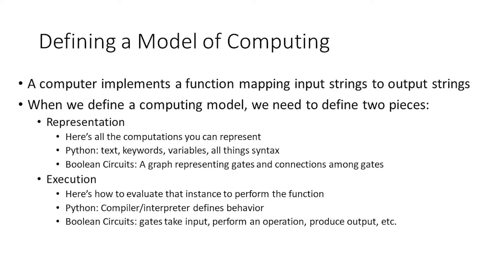As we go about defining a model of computation, we're actually going to need to provide two different components to formally describe what's going on. Those two things are going to be the representation of that model of computing and then the execution of that model. The representation is basically how you actually write down an instance of that model of computation, and the execution is how you process that description in order to actually perform some computation or perform some function.